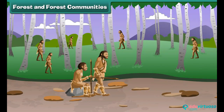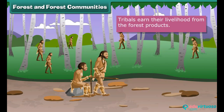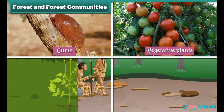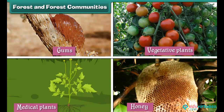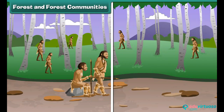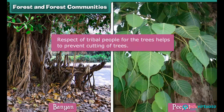Forest and Forest Communities — have you seen these people? These are tribals. The tribal people collect tree leaves and fruits. The tribals earn their livelihood from forest products like gums, vegetative plants, medicinal plants and honey. They get food as well as medicines from the different types of plants found in the forest. Tribals worship trees like banyan, and this respect for the trees helps in their preservation.